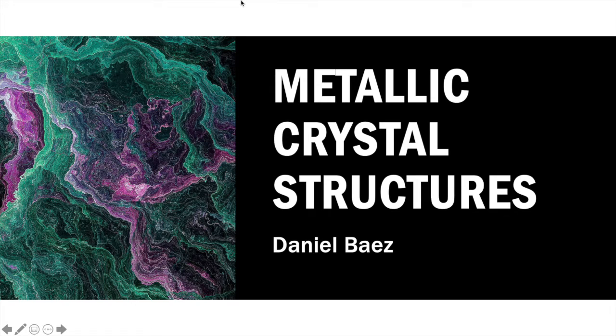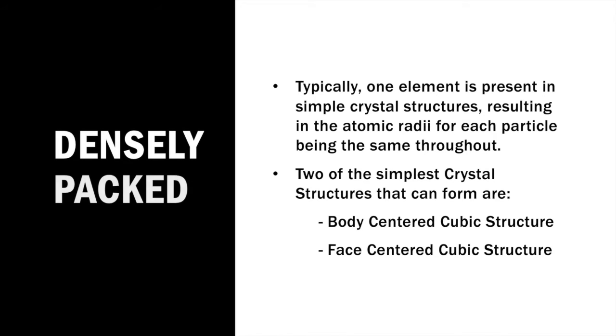Today we're going to be going over metallic crystal structures, a very important part in this course. They are densely packed unit cells. Typically one element is present in these structures. This results in the atomic radii for each particle being the same throughout, so they each occupy the same amount of space.